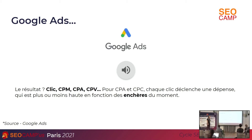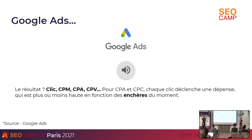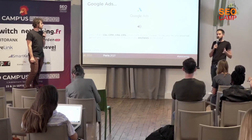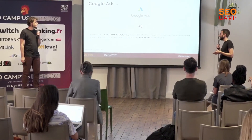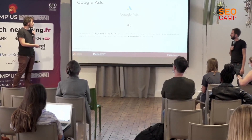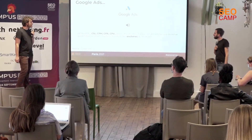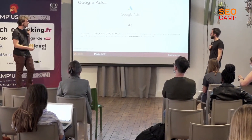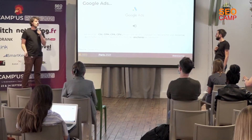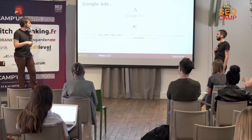Le résultat est hyper important sur Google Ads. L'idée, c'est qu'en fonction de ce qui se passe, vous allez payer en fonction de l'interaction. Ça peut être un clic, un coût par mille impressions, un coût par acquisition ou un coût par vue. Chaque clic va déclencher une dépense, tout dépendra des enchères du moment.